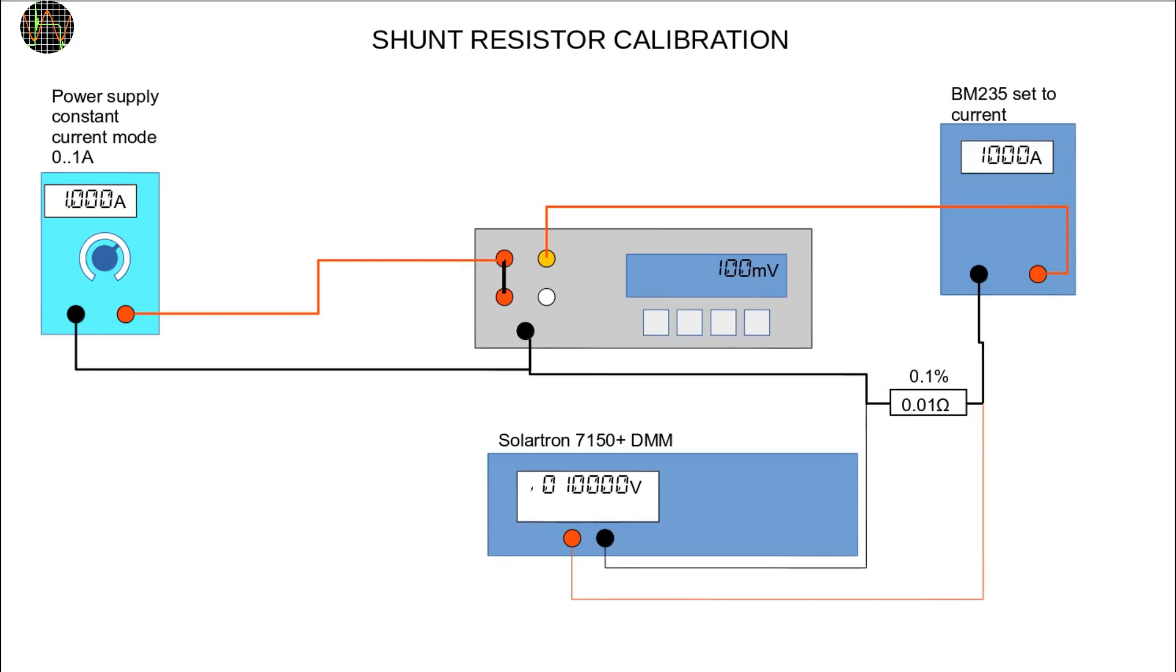The setup for calibrating a shunt resistor. For this you need a power supply that can generate 1A. The current is measured by the BM235 and by the solatron 7150+. However, since the solatron's current range is out of calibration,